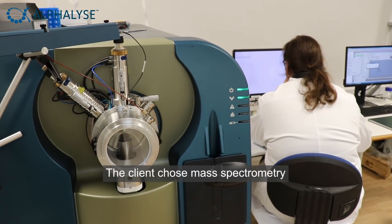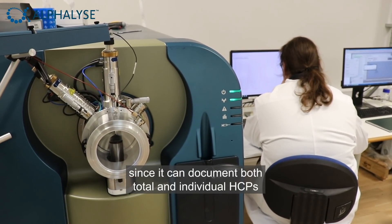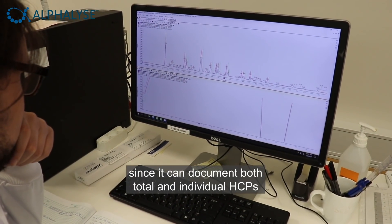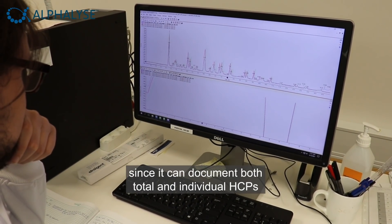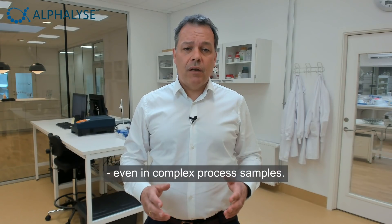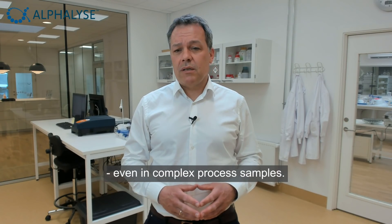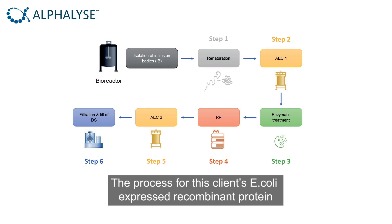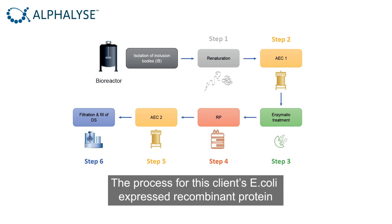The client chose mass spectrometry since it can document both total and individual HCPs, even in complex process samples. The process for this client's E. coli expressed recombinant protein consisted of six purification steps.